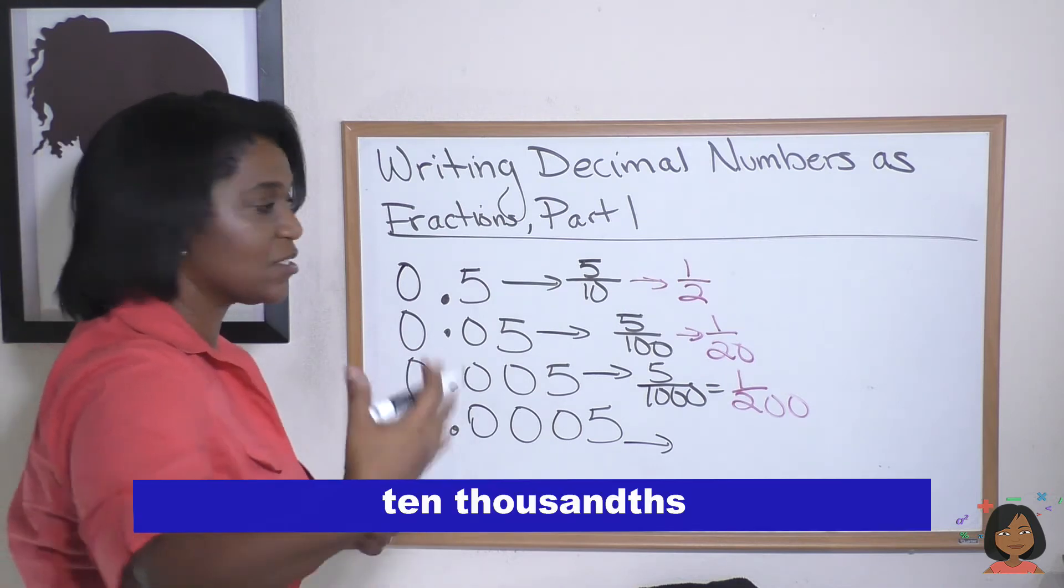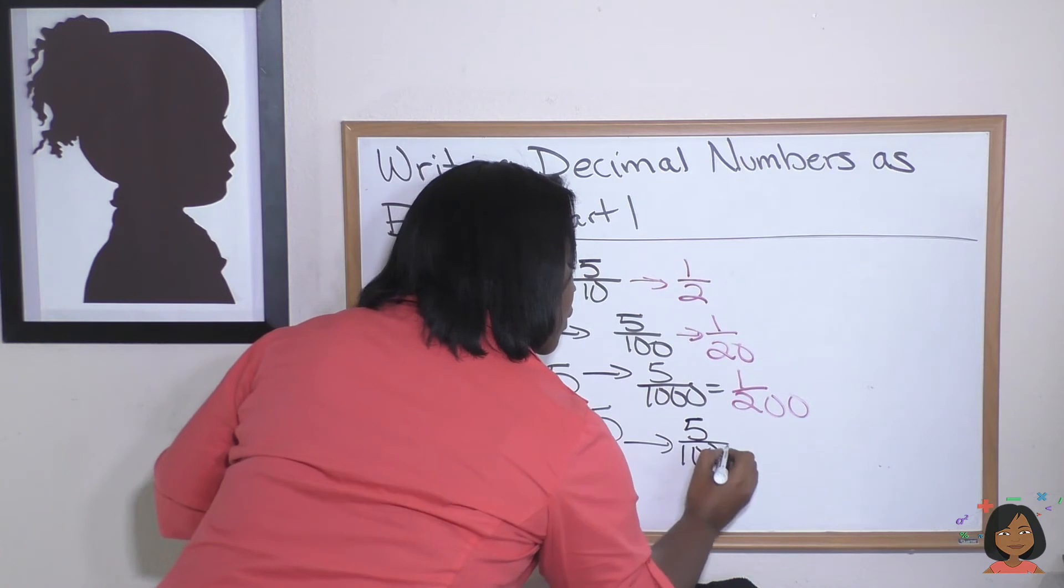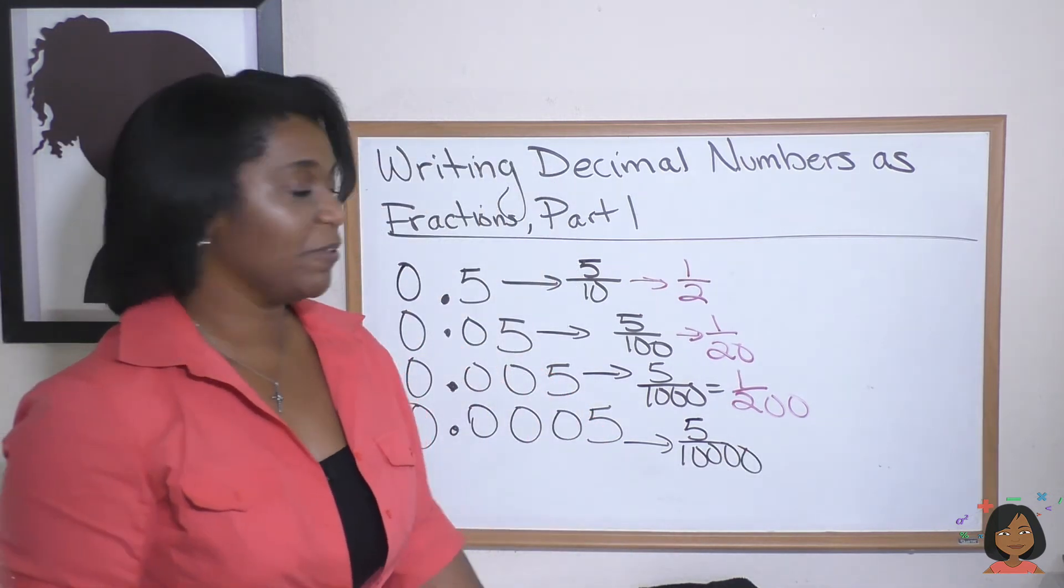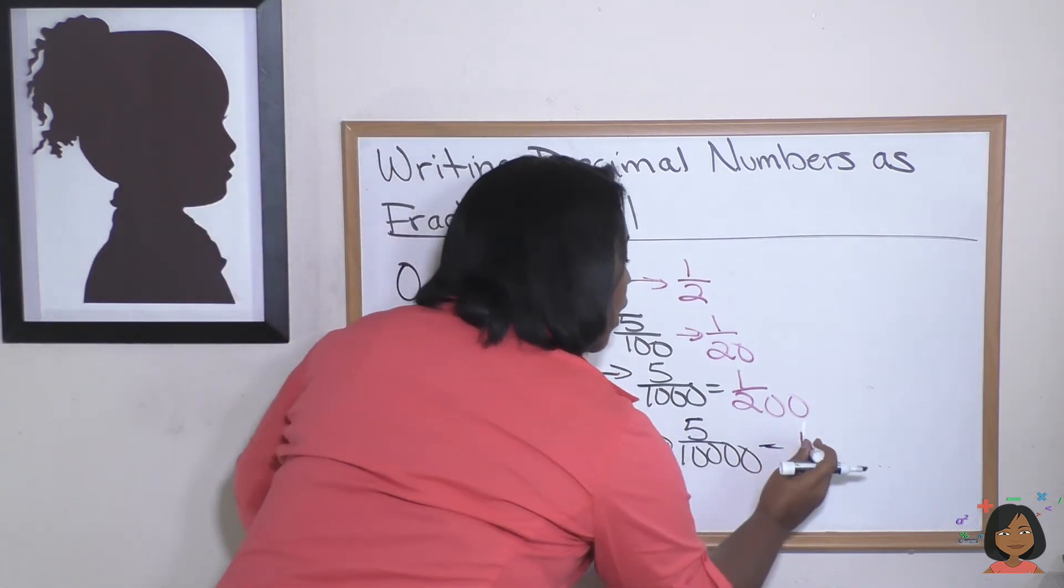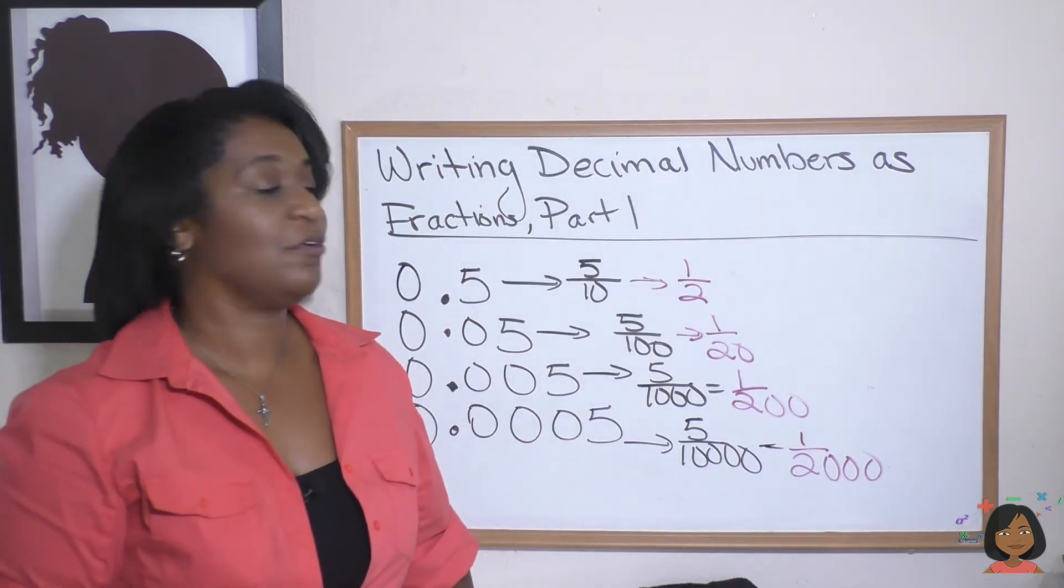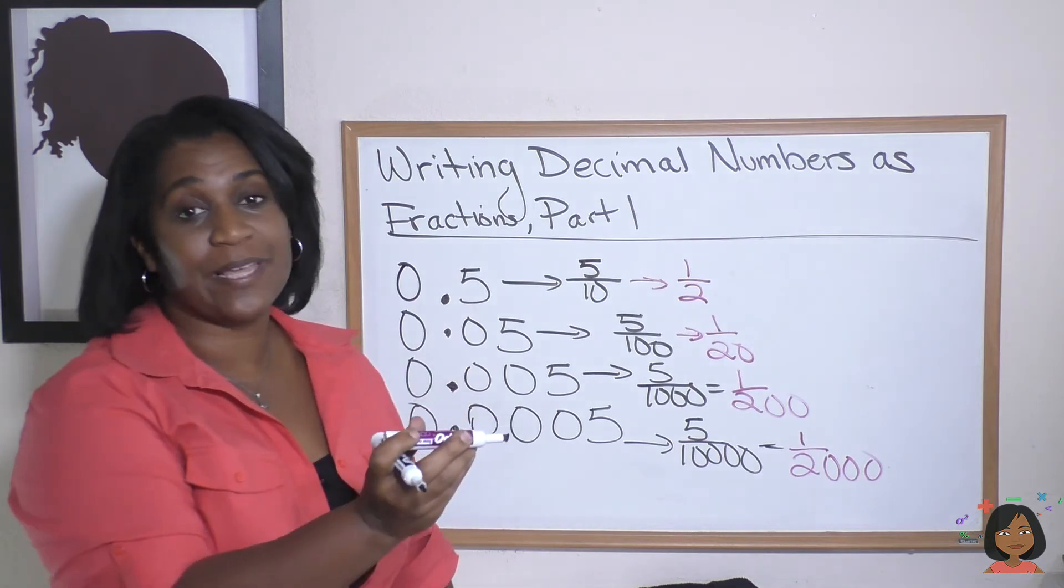There we go. And now when I simplify it, it's the same thing as saying one over two thousand. It's really that simple. You make sure you just take your number, recognize what place it's in.